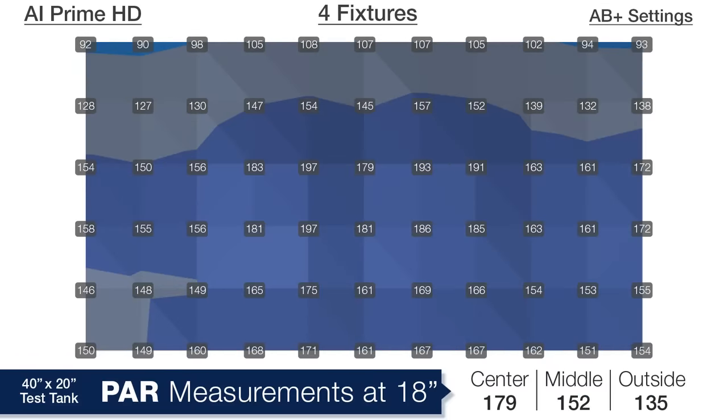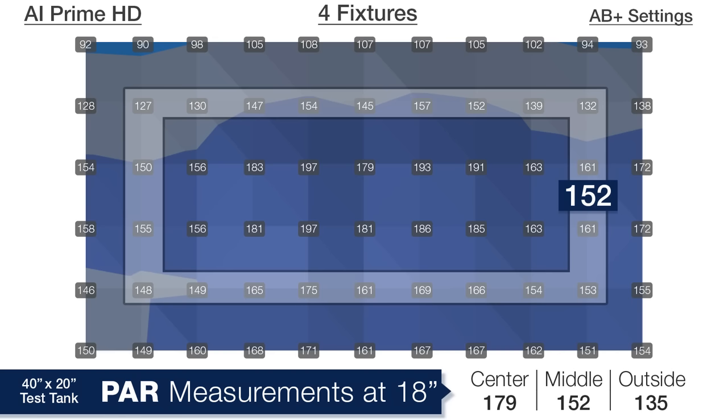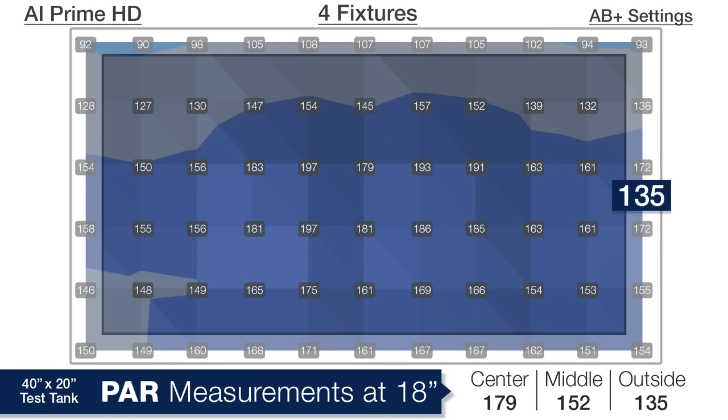Then dropping to the bottom of the tank, pretty flat even distribution of 179 PAR in the center, 152 in the middle ring, and an average of 135 PAR on the outside edges of the tank.